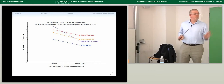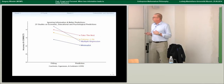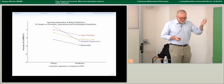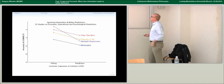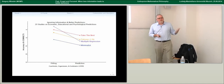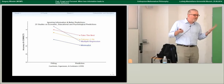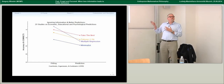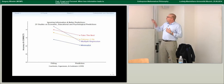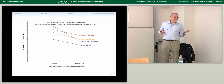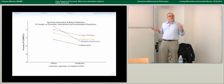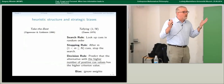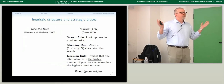Before getting to results, I want to explain what these heuristics are, because there are two traditions that study heuristics. One is Kahneman and Tversky's tradition, where you might think heuristics are vague and not well worked out. But we're actually going to be comparing the performance of well-specified models to standard benchmarks.